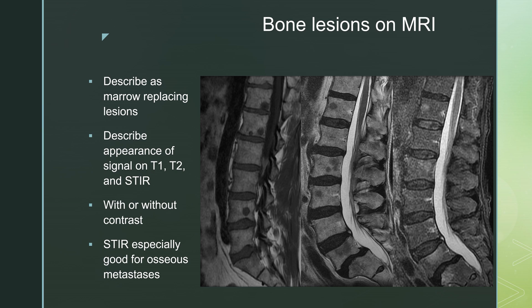On MRI, you describe these as marrow-replacing lesions. You describe the appearance of the signal on T1, T2, and STIR. So this would be hypointense on T1, hypointense on T2, hyperintense on STIR — classic appearance of osseous metastatic disease. This can be done with or without contrast; I usually prefer the STIR sequence to look for osseous metastases because they tend to be bright.